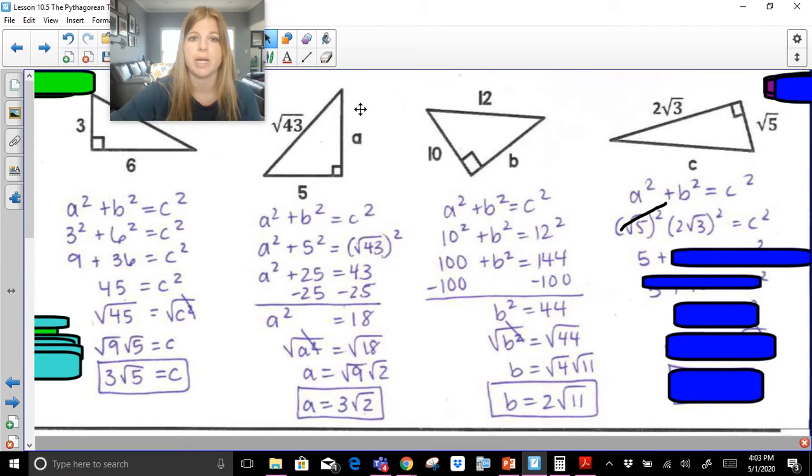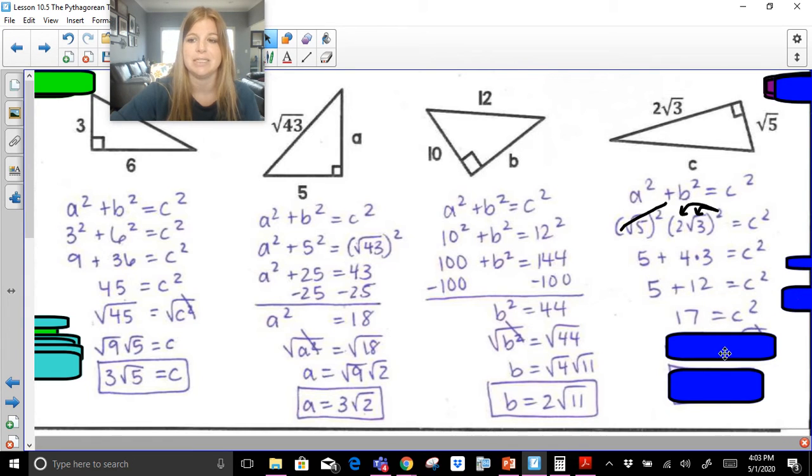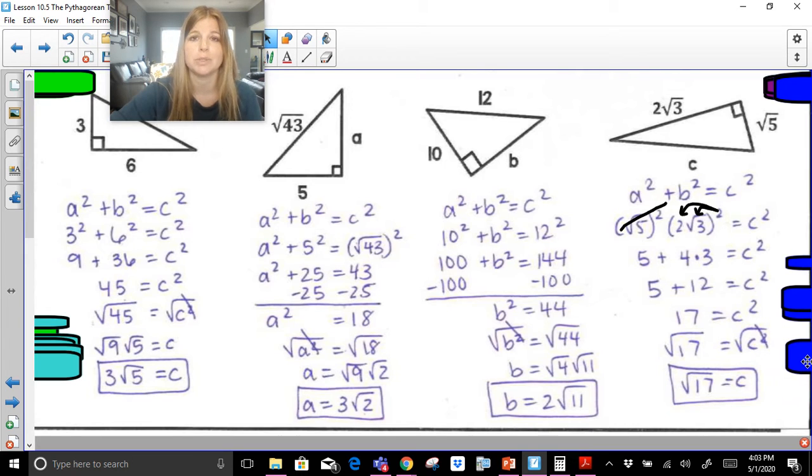Now, watch closely with this. You square the 2, and then you square the radical 3. So 2 squared is 4, and then the square root of 3 squared is 3, because the radical and the square cancel out. This becomes 5 plus 12 equals C squared. C squared is 17. We take the square root, and 17 can't be broken apart, so it's simply radical 17.